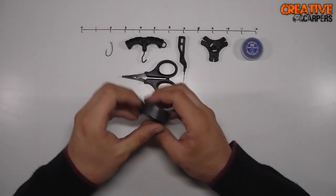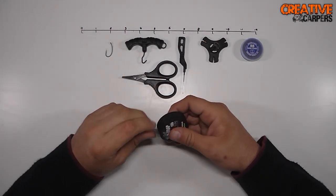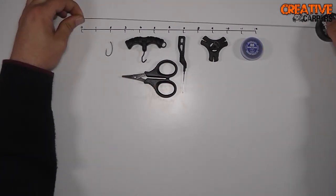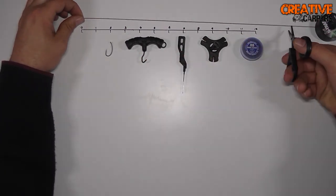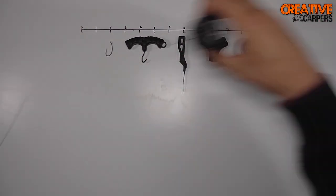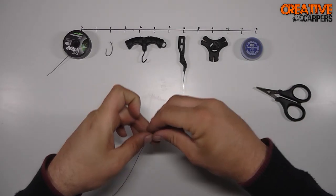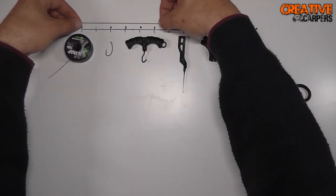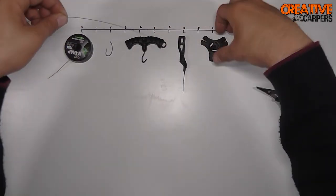So you start off by taking around about 14 inches or so of the coated hook link, and I like to strip off around about 6 inches of that.